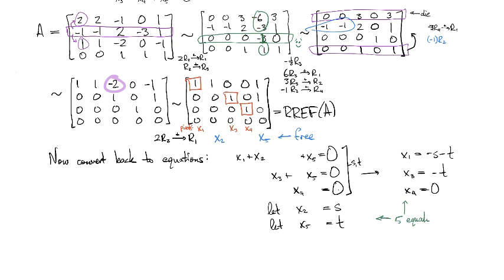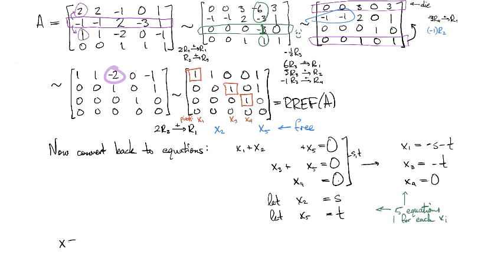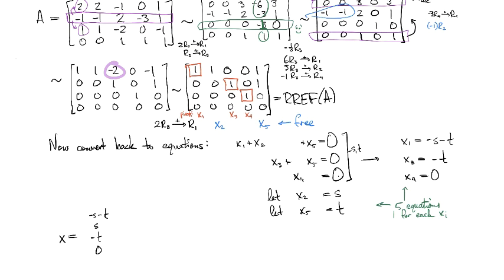And so now I have between these guys and these guys, I have five equations. And in particular, I have one equation for each of my unknown variables. So then I can say, okay, so x is going to be, and x1 is -s - t, x2 is s, x3 is -t, x4 is 0, and x5 was t. So that's my x.